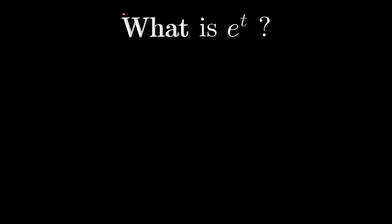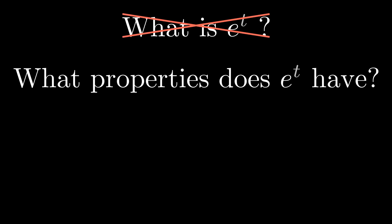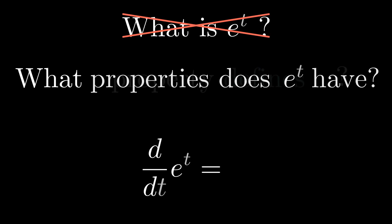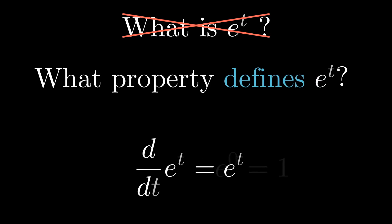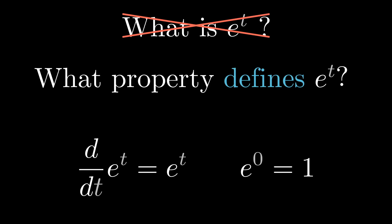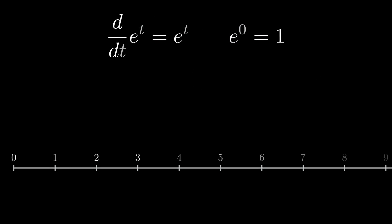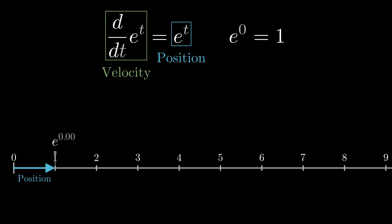One way to think about the function e to the t is to ask what properties does it have? Probably the most important one, and from some points of view the defining property, is that it is its own derivative. Together with the added condition that inputting 0 returns 1, it's actually the only function with this property. You can illustrate what this means with a physical model: if e to the t describes your position on a number line as a function of time, then you start at the number 1, and what this equation is saying is that your velocity — the derivative of position — is always equal to that position.